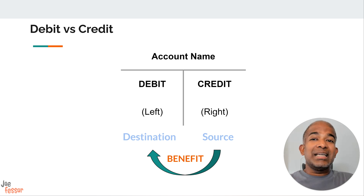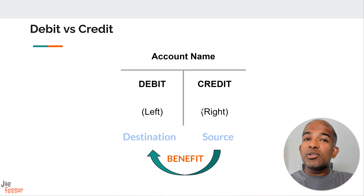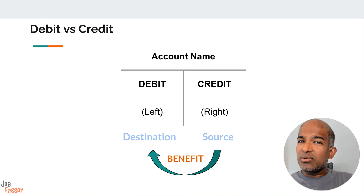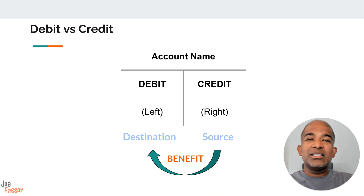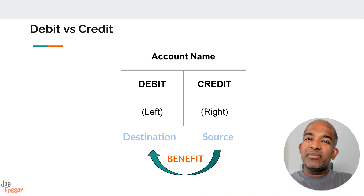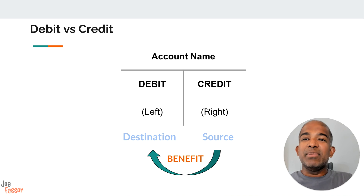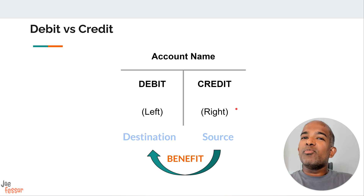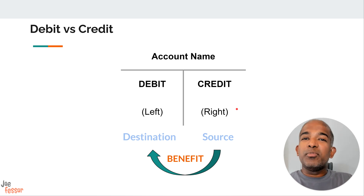It's important to note that debits and credits in accounting have a slightly different meaning than how we use them in everyday life. You might associate debit with money leaving your bank account and credit with money coming in. But in accounting, it's not that simple. Instead, think of it this way — the source of a benefit is credited and the destination is debited. So when you sell a product, the revenue account, which is the source of the benefit, is credited, and the cash or accounts receivable account, which is the destination of the benefit, is debited. Understanding debits and credits is crucial because it's how we track the flow of money and resources within a business, allowing us to create accurate financial statements and make informed decisions.